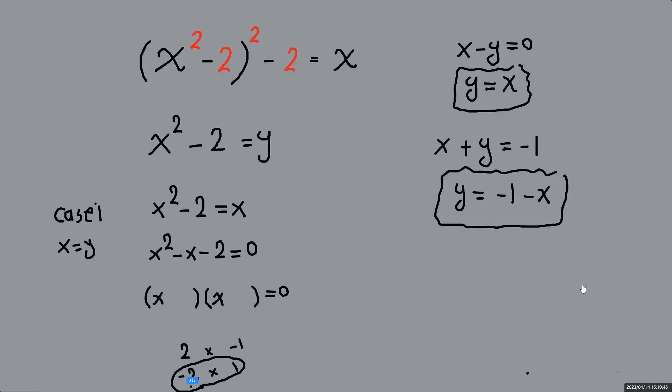So I'll be writing it as x minus 2 times x plus 1. So we have two values for x. x will be 2 and x being negative 1. So these are the two values and this was case 1. So this case closed.